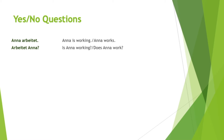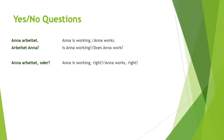Another common way to ask a question is to not invert the subject and the verb but just leave it as it is and add the little word 'oder' at the end. Oder means 'or,' but in this case it means more like 'right.' When you use this type of question, it means you think you already know the answer but you're not sure and just want to confirm — kind of like adding 'doesn't she,' as in 'Anna works, doesn't she?'